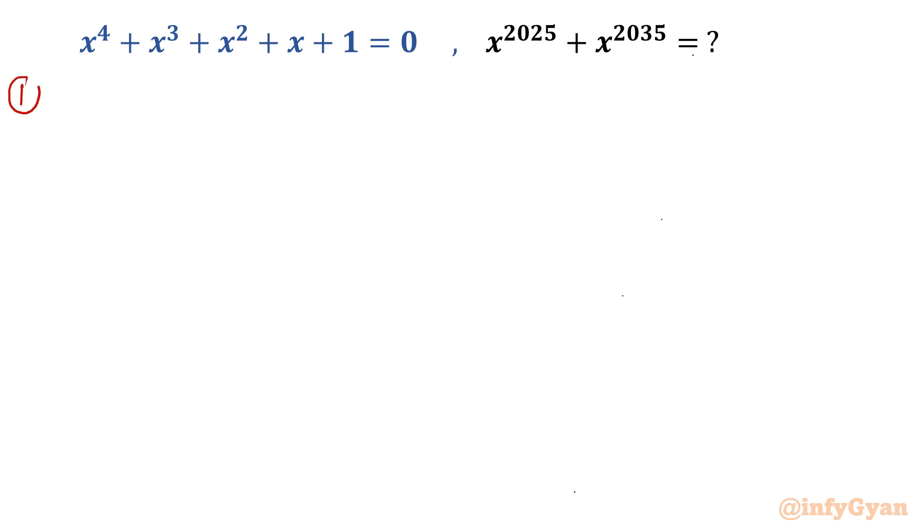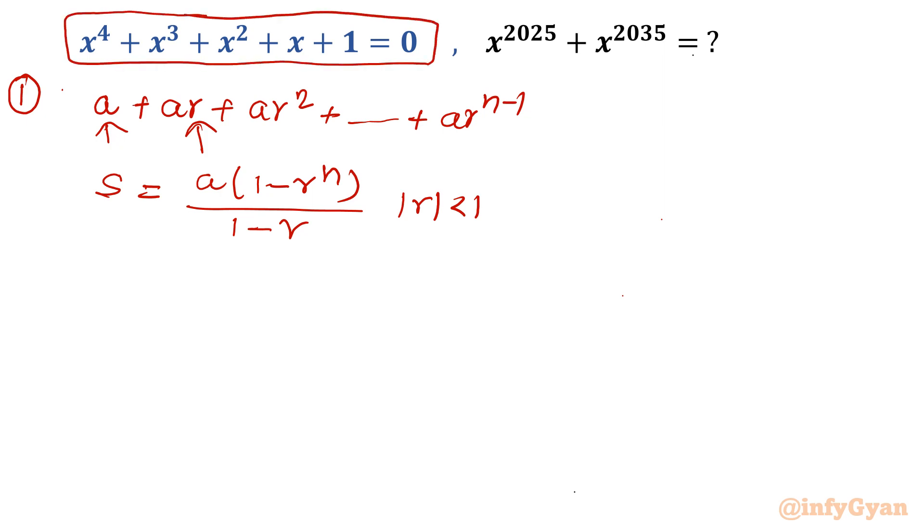The first method I am taking is using GP. Let me consider if one GP is known and we have to find out the sum of n terms. We can write this series which is in GP where a is first term and r is common ratio. The sum formula is first term times 1 minus common ratio raised to the power number of terms divided by 1 minus common ratio where mod r less than 1. Let's frame our equation into GP. We can write this equation as 1 plus x plus x square plus x cube plus x power 4 equal to 0.